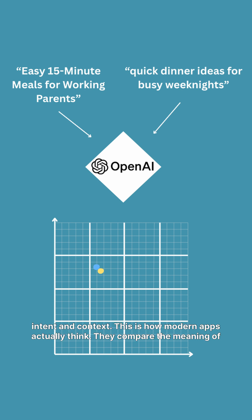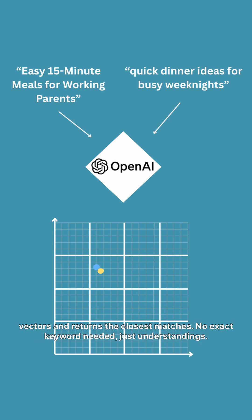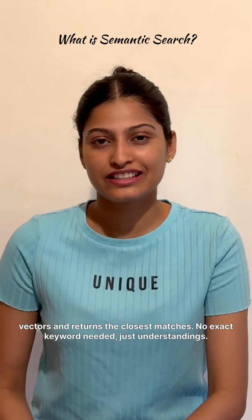This is how modern apps actually think. They compare the meaning of your query against stored embeddings. The database measures the similarity between vectors and returns the closest matches — no exact keyword needed, just understanding.